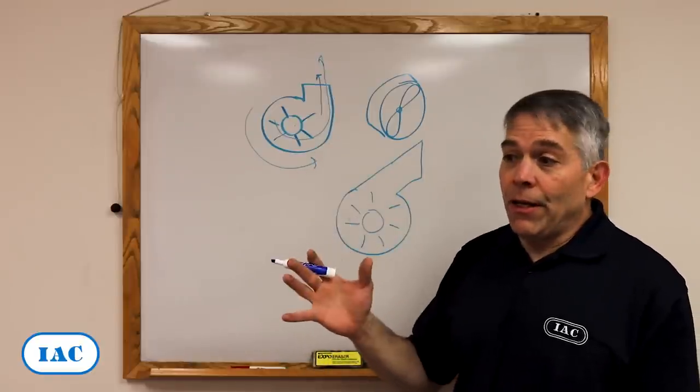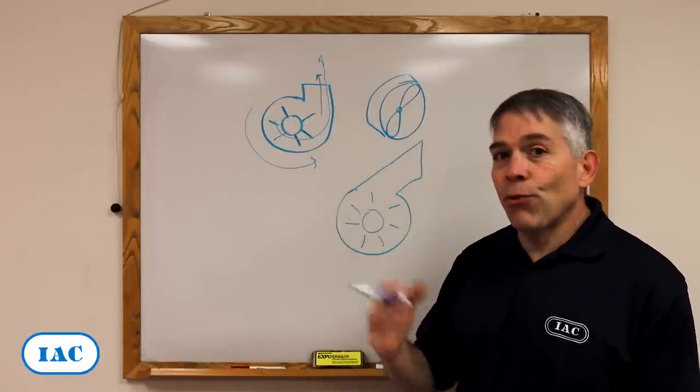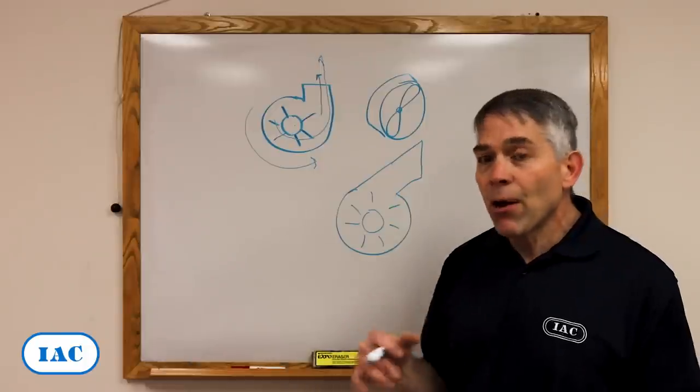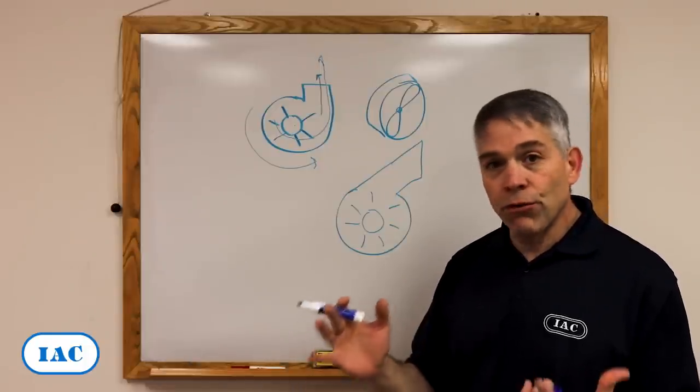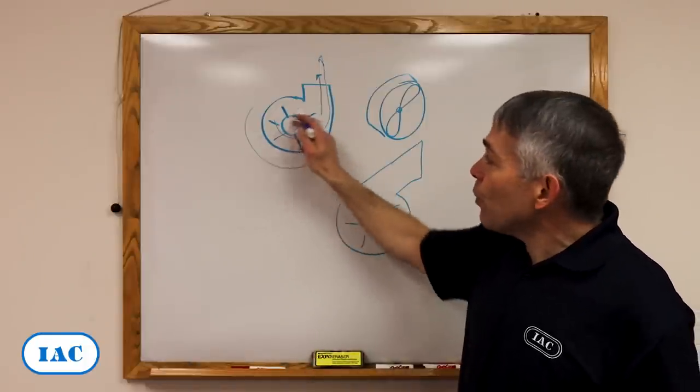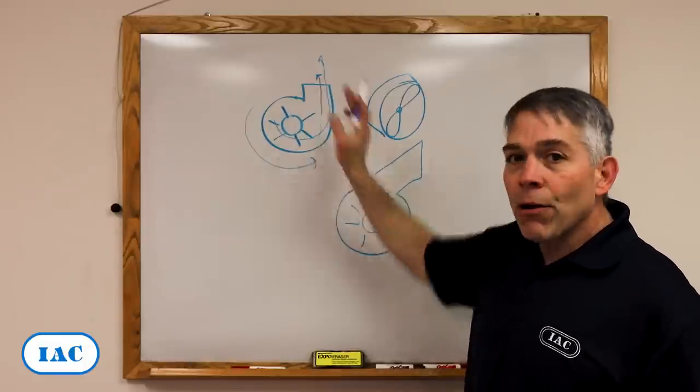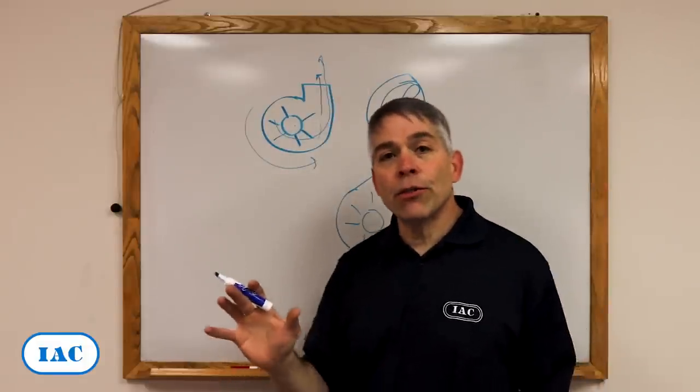Now, it's easy to see that people think that if the fan is rotating the wrong way, it would blow backwards. But that is not the case with centrifugal fans. If this wheel is rotating the wrong way, it'll still blow air out, but at a very inefficient mode.